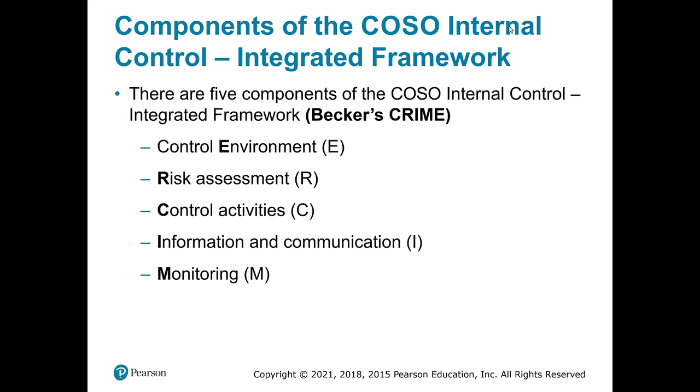There are five components that are actually useful to know. If you take the Becker CPA prep course, you'll see them referred to as Becker's CRIME acronym. The five categories are: Control environment, Risk assessment, Control activities, Information communication, and Monitoring. These give you ways of thinking through the whole system and seeing if the entire company supports the control environment.